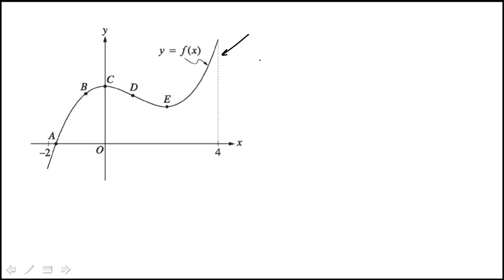So here we're showing the graph of this function f and we're asked out of these five points where could the derivative of f be equal to the average rate of change of f over this closed interval minus 2 to 4.